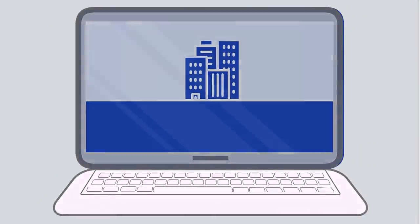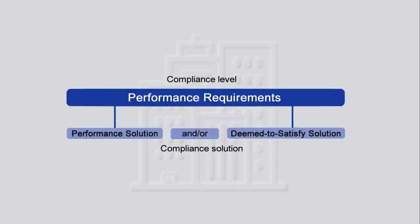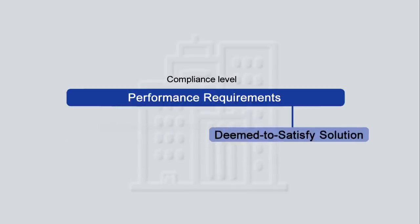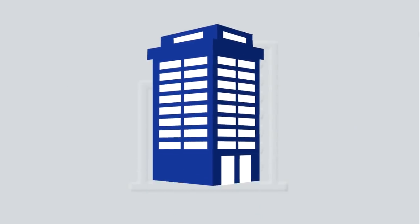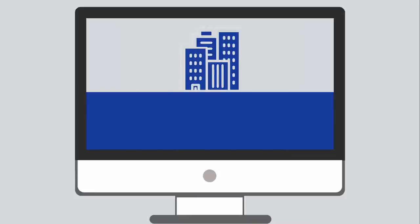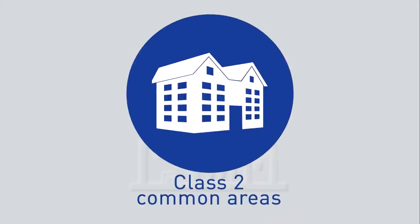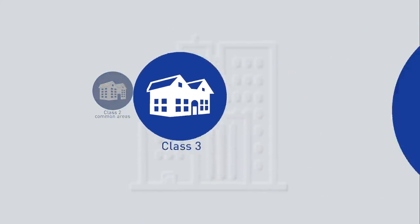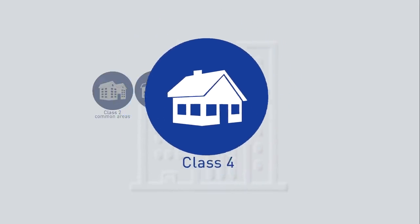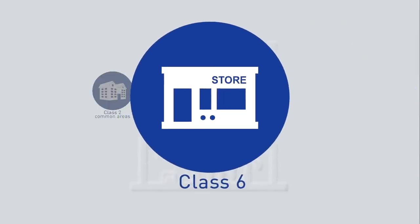As a performance-based code, the NCC provides various ways that a building design can meet minimum energy efficiency standards. A deemed-to-satisfy approach is one option. This video outlines the use of the facade calculator to test a building design using deemed-to-satisfy standards and the provisions contained in J1.5 of NCC Volume 1. Changes to the NCC glazing performance requirements have broadened your ability to prove overall compliance for a building's facade, allowing the use of more uniform glazing types on all aspects of a facade using the deemed-to-satisfy provisions.